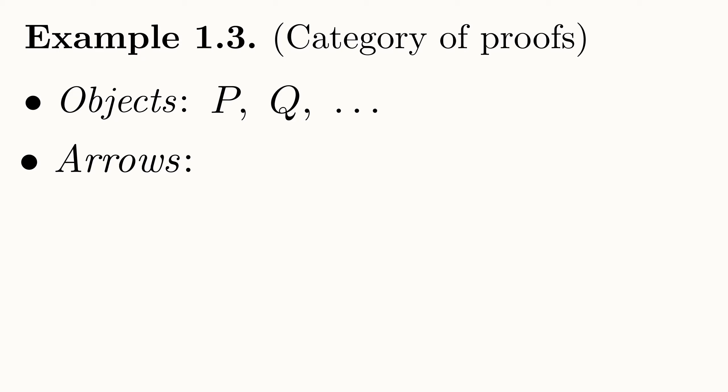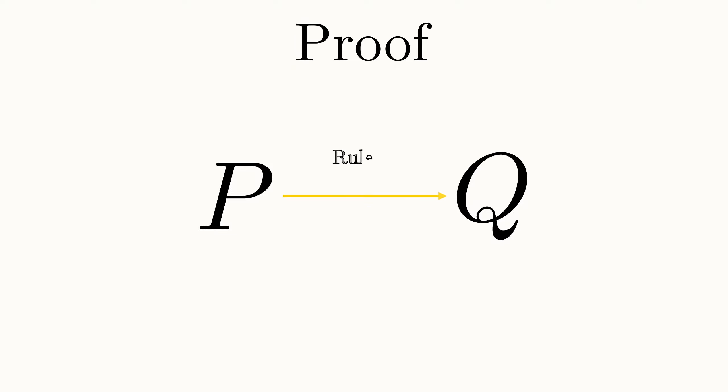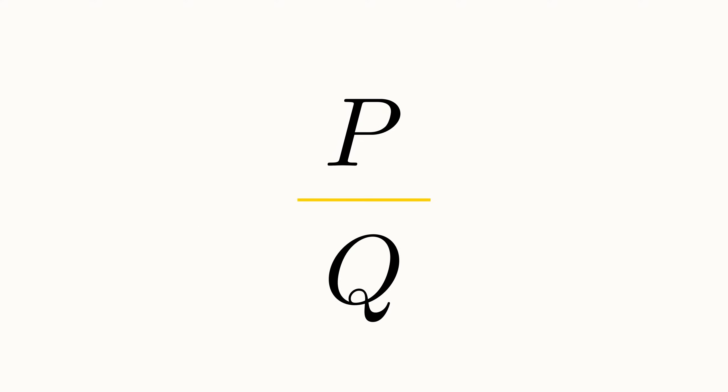Before I say what the arrows are in this category, I want to introduce the concept of proof. Suppose we have two propositions, let's call them P and Q. It may be the case that logically, Q follows directly from P. We say that there is a rule of inference that the conclusion Q logically follows from the premise P. In this case, we write P above a little line with Q below it. Then we define proof or deduction as the process of chaining these rules of inferences together to prove that a proposition is true given that the premises are also true.